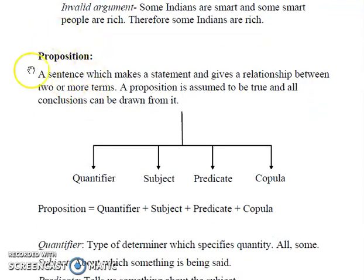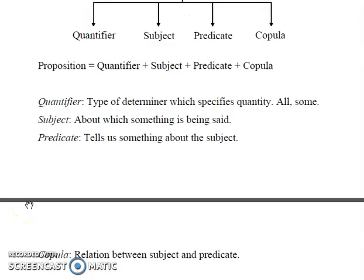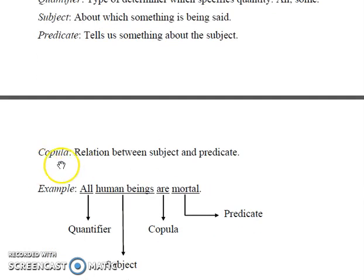The next important concept to learn is Proposition. A proposition is a sentence which makes a statement and gives a relationship between two or more than two terms. A proposition is assumed to be true and all conclusions can be drawn from it. Any given proposition has four parts: quantifier, subject, predicate, and copula. A quantifier is a type of determiner which specifies quantity — 'all' and 'some' are examples of quantifiers. Subject is an entity about which something is being said. Predicate tells us something about the subject. And copula is the relation between the subject and predicate.